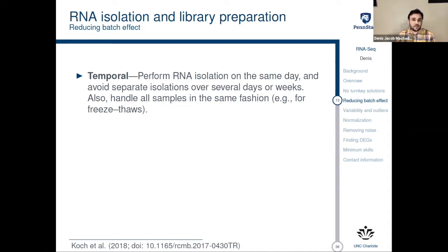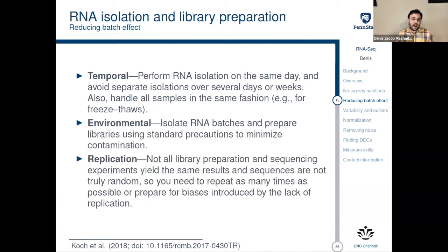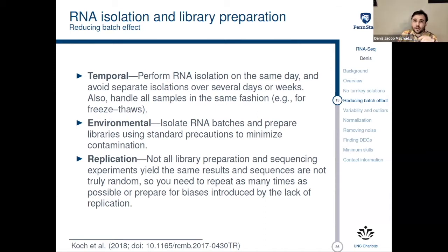What I personally do when I have to do this is work overnight or work during weekends so I can be in the lab for the entire process. There are also environmental things to consider — we have to isolate RNA batches and prepare libraries using standard precautions to minimize contamination. Replication is important: not all library preparation and sequencing experiments have the same results, and the sequences are not truly random. You need to repeat as many times as possible and prepare for biases introduced by the lack of replication, though it is challenging because you don't always have a lot of RNA and preparing libraries is expensive.